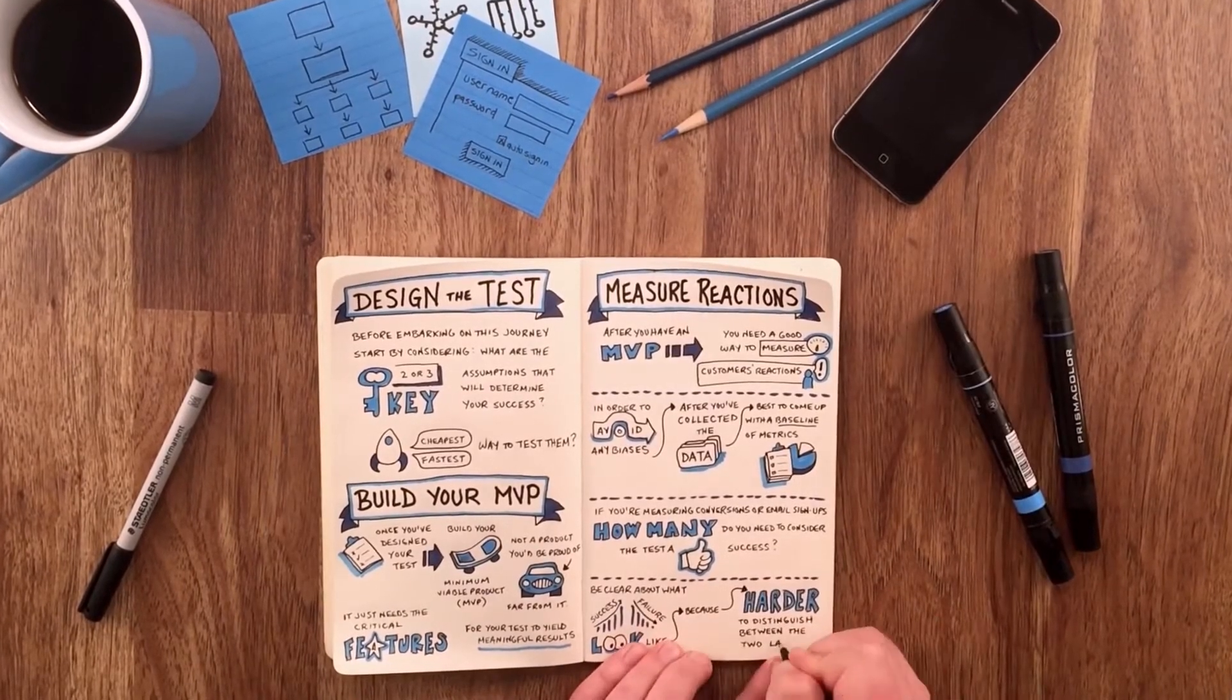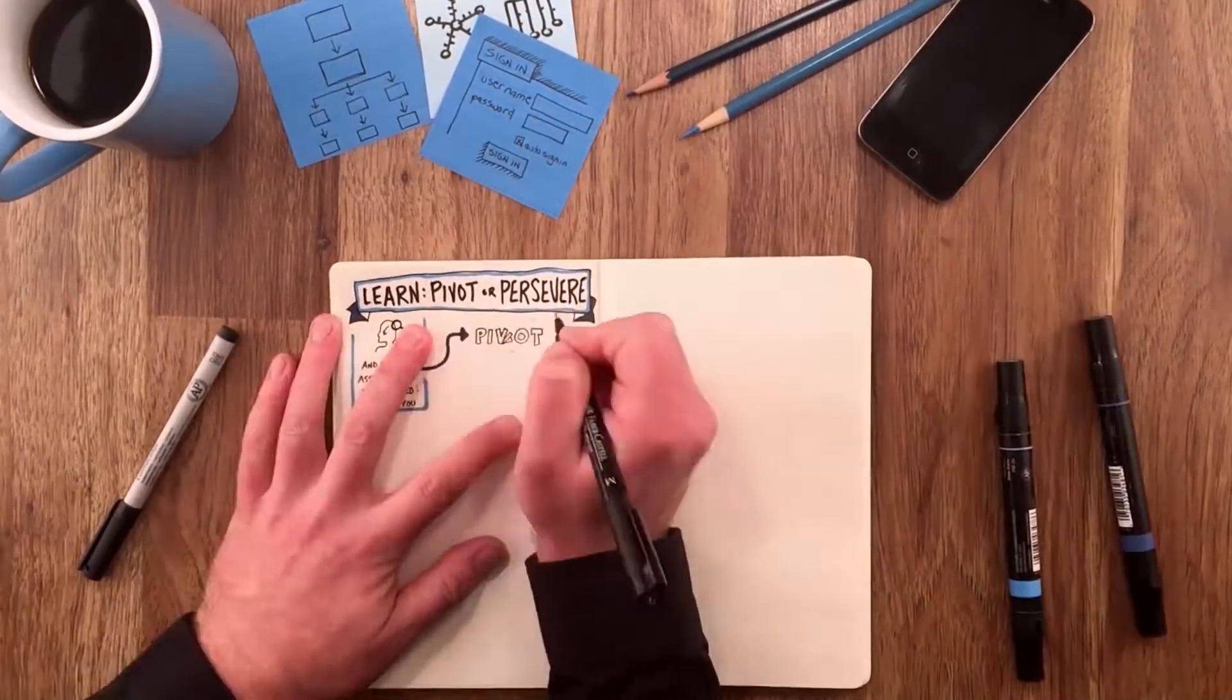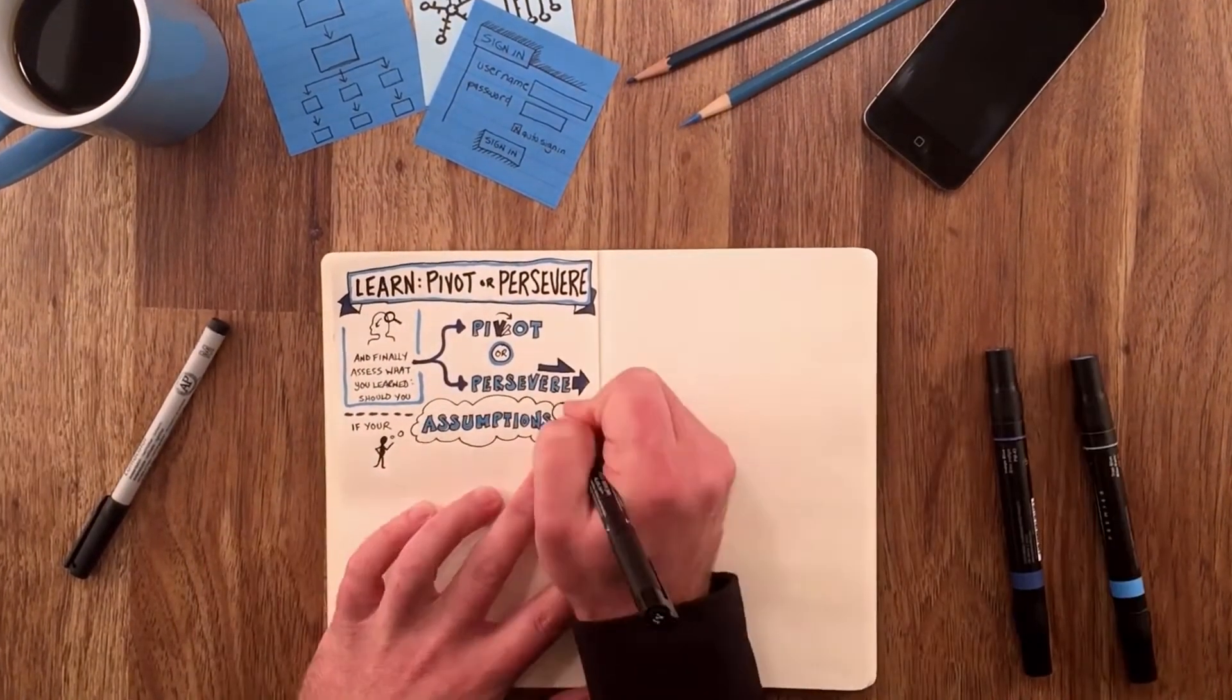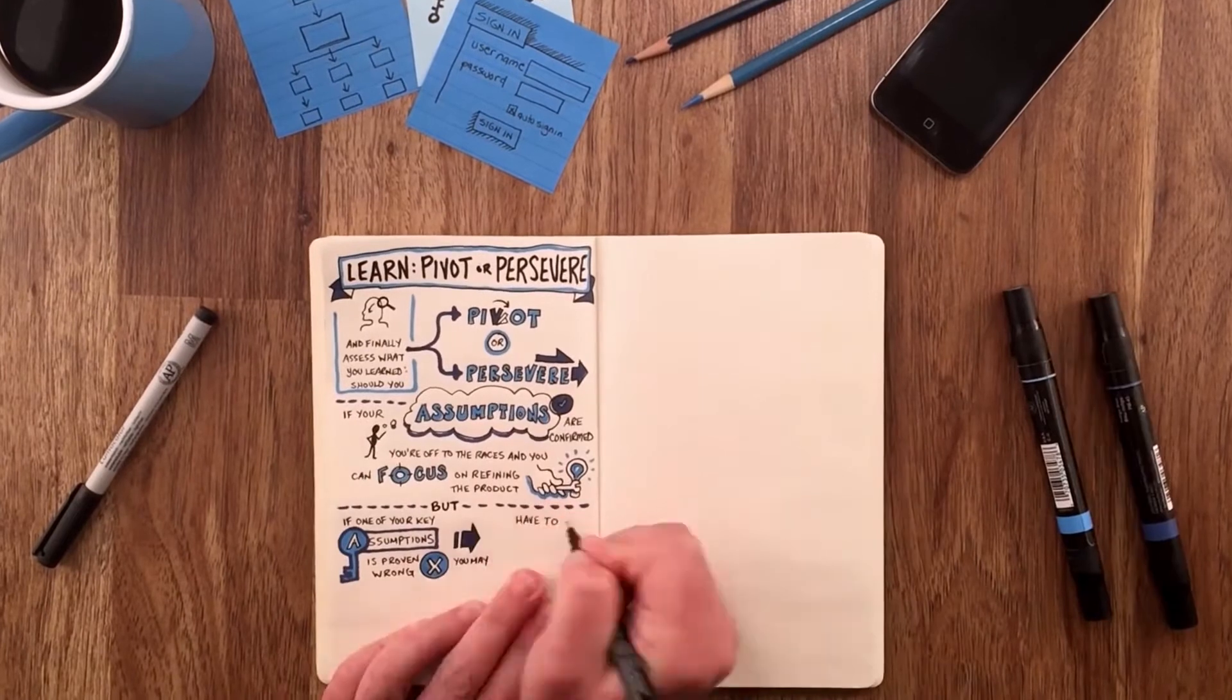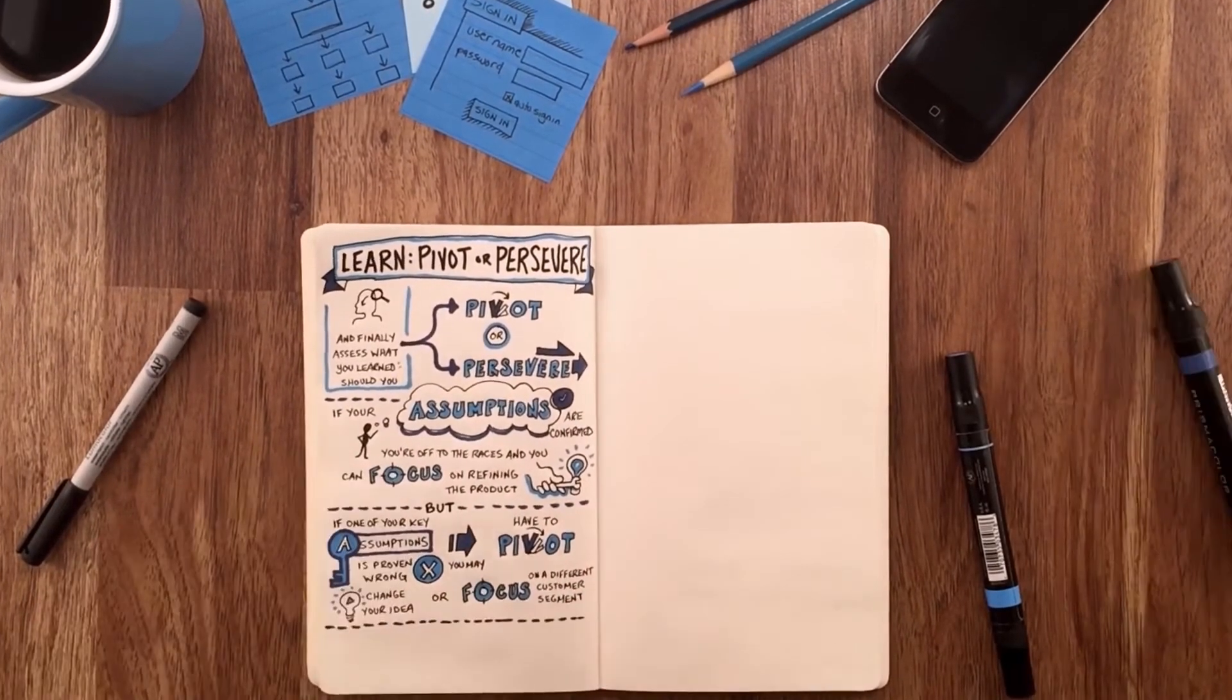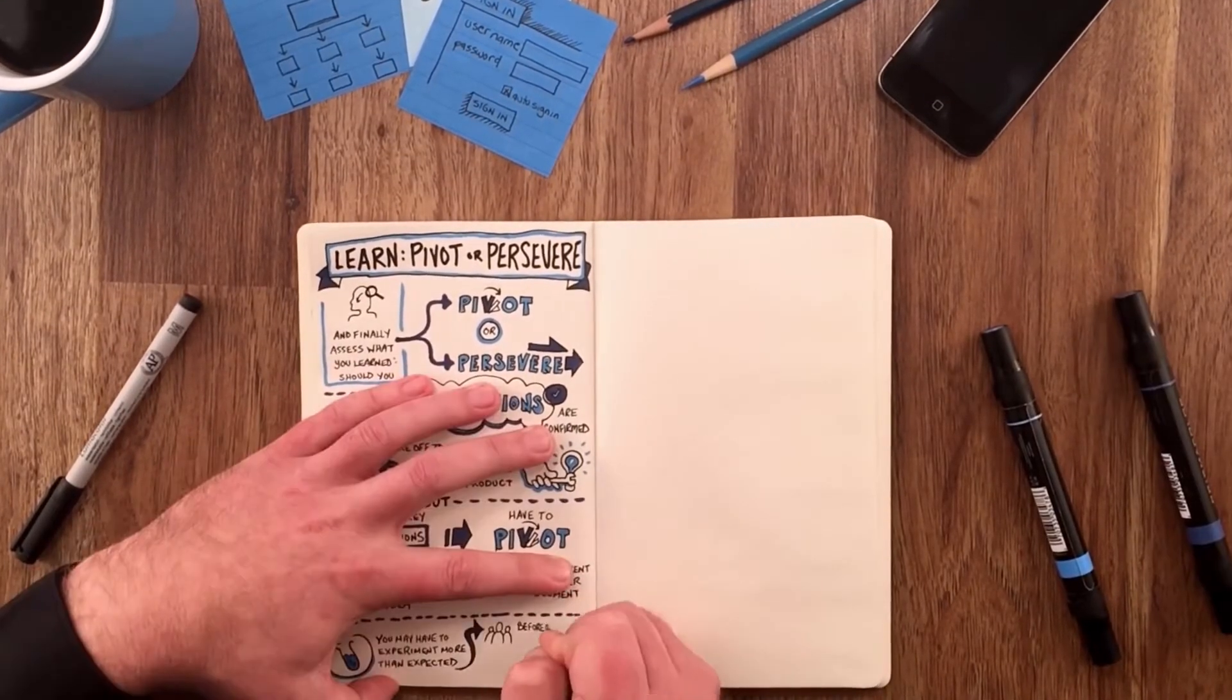Finally, assess what you learned. Should you pivot or persevere? If your assumptions are confirmed, you're off to the races and you can focus on refining the product. But if one of your key assumptions is proven wrong, you may have to pivot—change your idea or focus on a different customer segment—and start the cycle over again. You may have to experiment more than you expected before you can find what your customers really want.